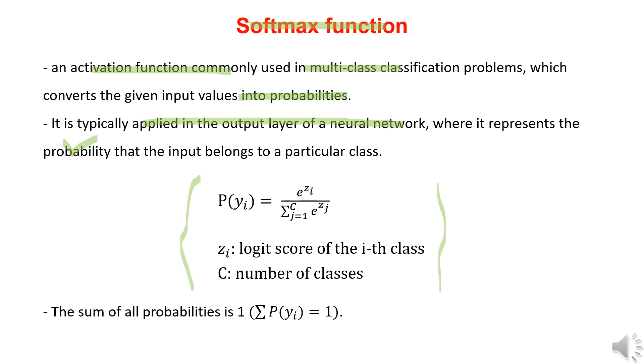The softmax function is defined by the following equation, where Z represents the logit score for each class. It converts each logit score into an exponential value, then normalizes by dividing by the total sum, resulting in a probability value between zero and one. Also, the total sum of the probabilities for all classes is one.